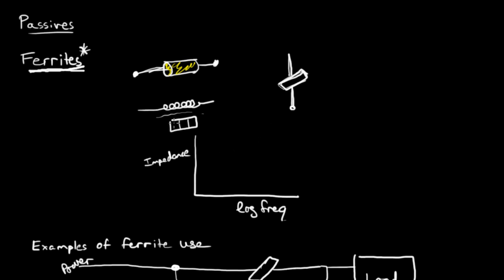Here I've drawn a surface mount component. There's one terminal, there's another terminal, and the ferrite would be the material in between. And I've actually gone in and measured a surface mount component between this terminal and this terminal. And I find a DC with a multimeter, it's about 0.25 ohms.